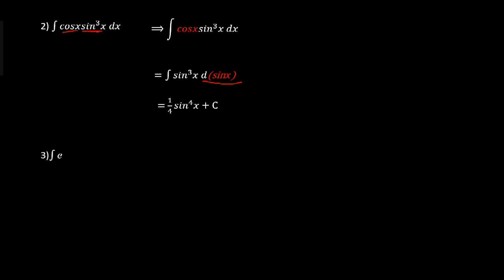Now let's look at the third example: the integral of eˣ times the square root of (1 + eˣ) dx. We have eˣ here. If we differentiate (1 + eˣ), we get eˣ. This means eˣ is the derivative of (1 + eˣ).